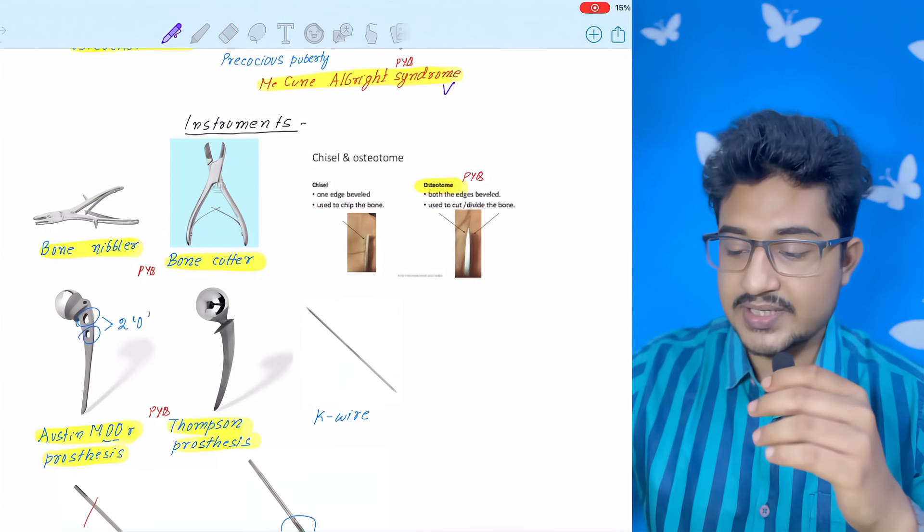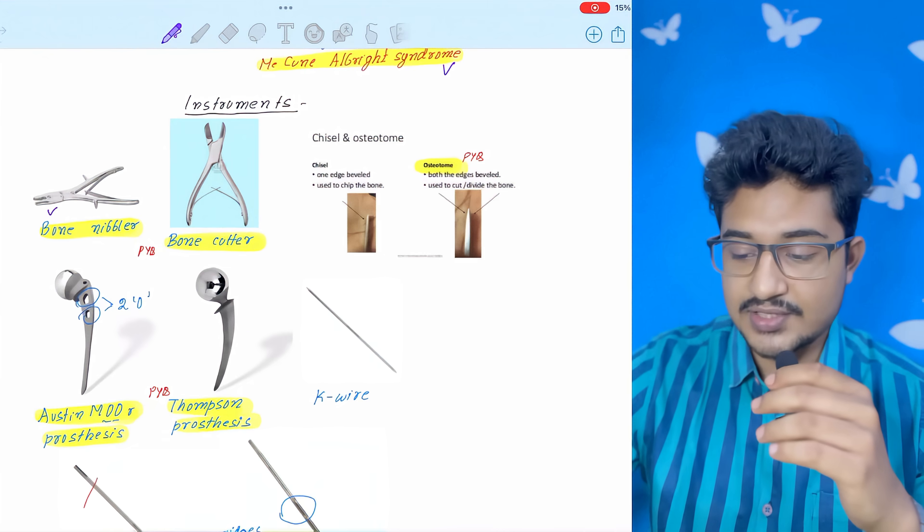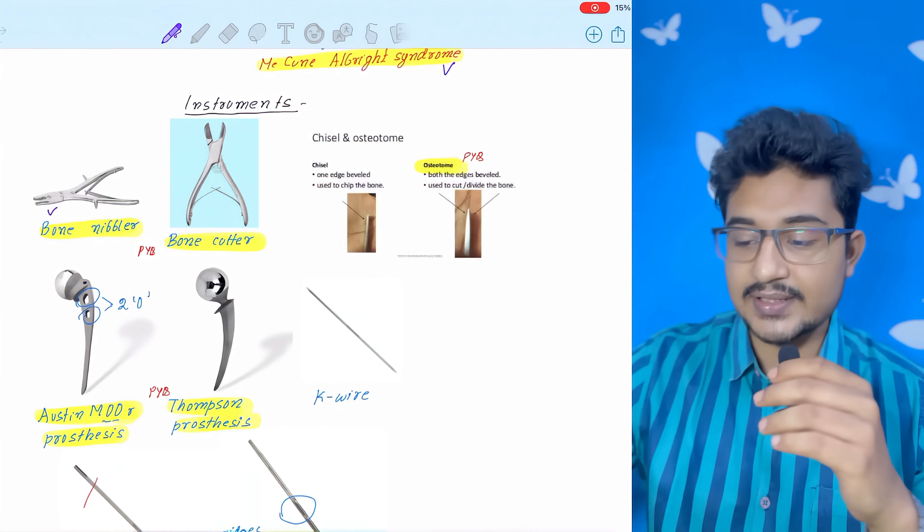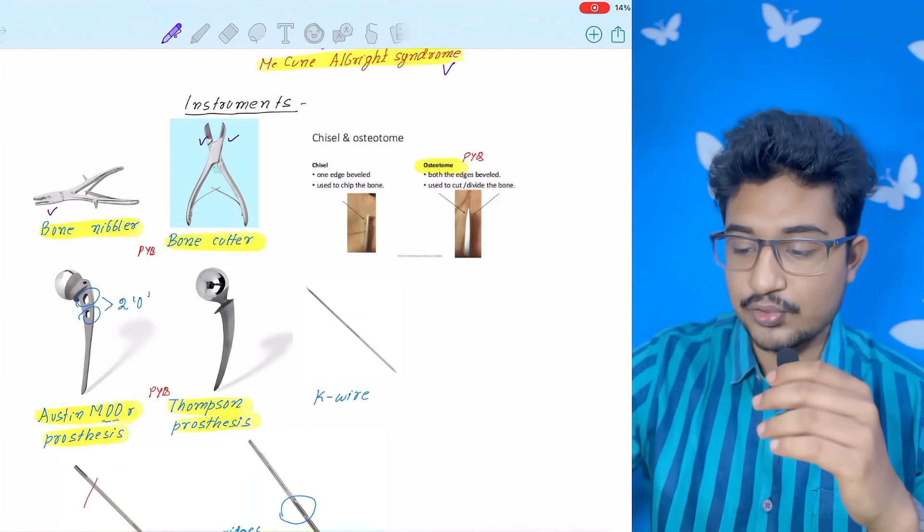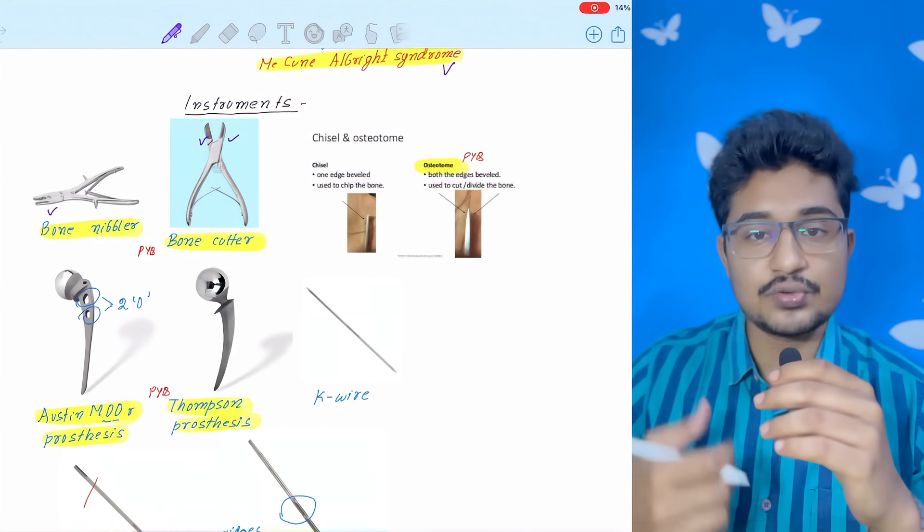Another important topic in orthopedics is the instruments. First is the bone nibbler. As you can see, it can nibble parts of the bone. Bone cutter: it is sharpened. Bone nibbler is blunt-ended, bone cutter is sharpened to cut the bones.